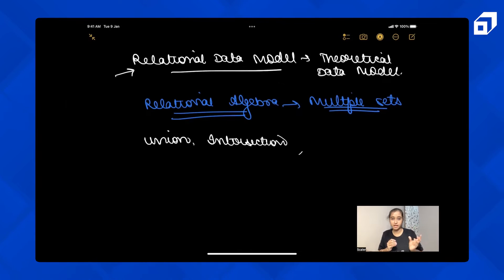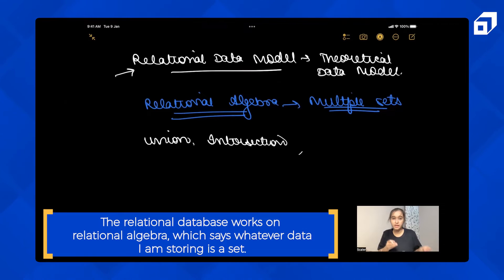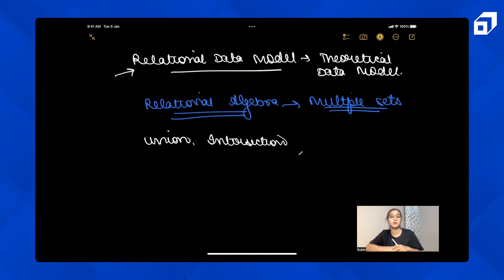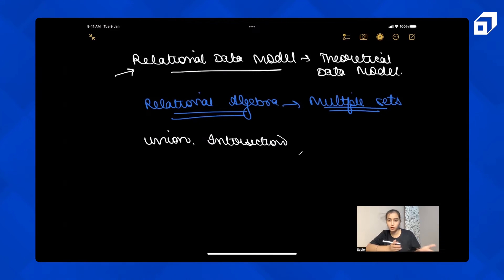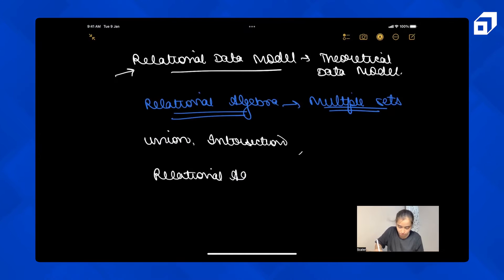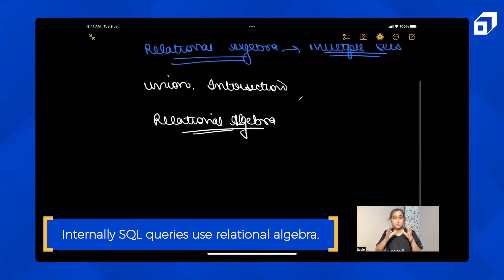Relational databases work on relational algebra, which says whatever data you're storing is a set. You must be aware of mathematical sets and the operations we can do: union, intersection, Cartesian product, superset, subset, complement. For example, in a Scaler codebase, you might have one set for students, one for instructors, one for mentors, one for batches. Between these sets you can perform different set operations. All SQL queries internally use relational algebra.